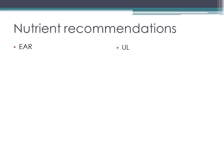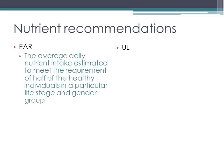Next we have the EAR and the UL, and both of these are used in setting nutrient recommendations. The EAR is the average daily nutrient intake estimated to meet the requirement of half of the healthy individuals in a particular life stage and gender group. So our RDA was set to meet nearly all of the people in our group, and the EAR is set to meet half of the people.